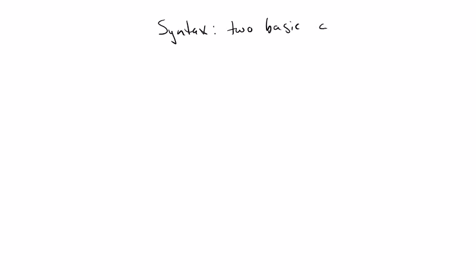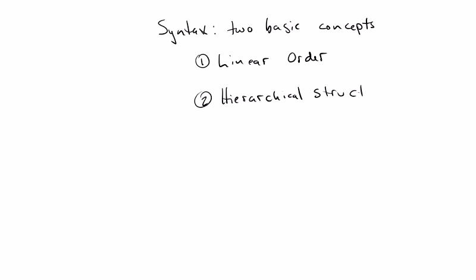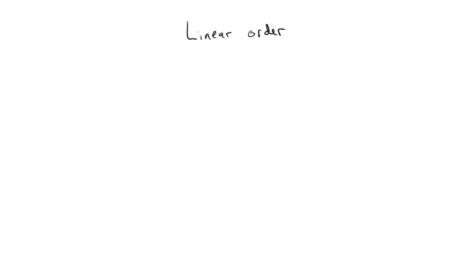As we discussed in class, syntax is essentially the study of sentences — how they're formed and how they're structured. In order to set the groundwork for thinking about the nature of sentence structure, we need to take into consideration two basic concepts: the first is linear order, and the second is hierarchical structure. Within hierarchical structure, we'll also need to understand the concept of constituency.